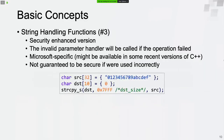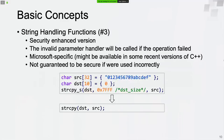However, the security-enhanced string handling functions are not guaranteed to be secure if used incorrectly. In the following example, we are trying to copy data from the source string to the destination string. We passed 0x7FFF to the second parameter, which is much greater than the actual buffer size. Usage like this will lead to buffer overflow — the security-enhanced function will just act like the traditional strcpy function.